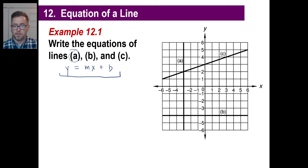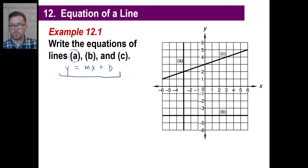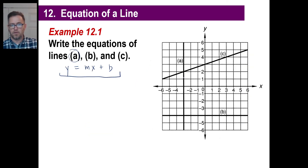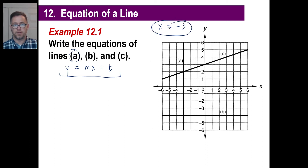Let's take a look at the first one. That's a vertical line. It's on — the x value is negative three, and it doesn't behave like our normal lines. If it's only the x value that is negative three, just write: x is negative three, and you're done.